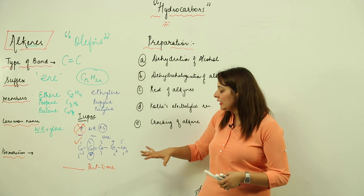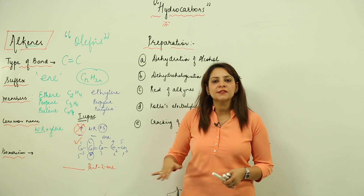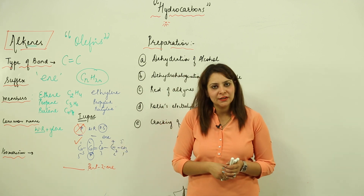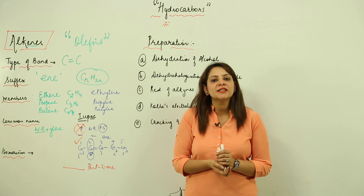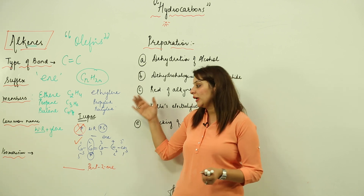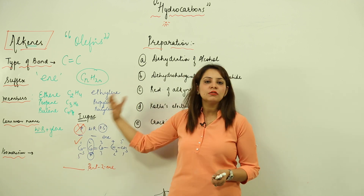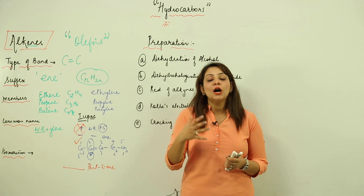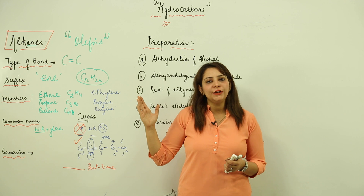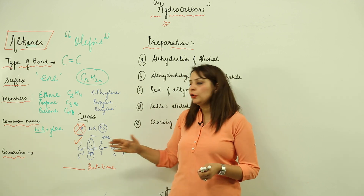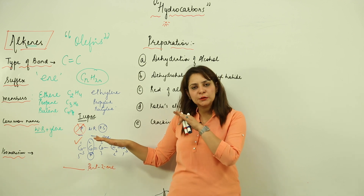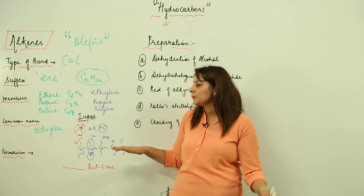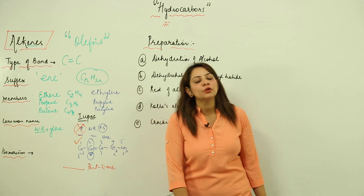Regarding isomerism, alkenes possess both stereo isomerism and structural isomerism. They show position isomerism and cis-trans isomerism. For more detail on the different types of isomerism and which compounds show which kind, refer to the general principles of organic chemistry video.